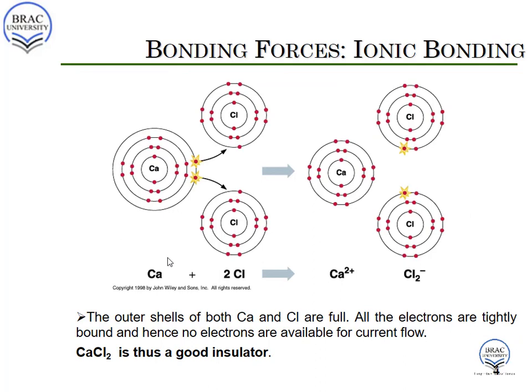Similar things happen when calcium chloride is formed, except in this case one calcium atom gives up two electrons, and two chlorine atoms accept one electron each. A cation of calcium 2+ is formed, which attracts two chloride ions, and thus calcium chloride is formed. As with sodium chloride, there are no free electrons to make current pass through it, so calcium chloride is also a very good insulator.